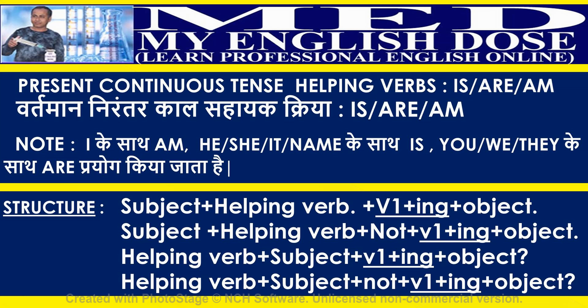Understand the sentence structure for present continuous tense. Positive sentence: subject plus helping verb plus first form of a verb plus -ing plus object. Negative sentence: subject plus helping verb plus not plus first form of a verb plus -ing plus object. Interrogative: helping verb plus subject plus first form of a verb plus -ing plus object. Interrogative negative: helping verb plus subject plus not plus first form of a verb plus -ing plus object.